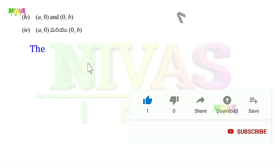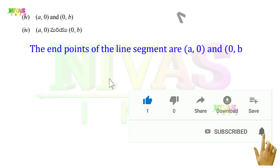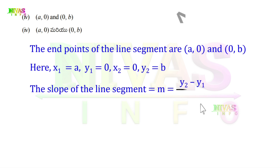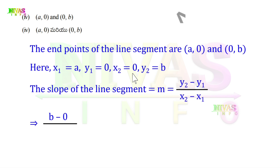Fourth one: endpoints are (a, 0) and (0, b). So x1 = a, y1 = 0, x2 = 0, y2 = b. Using the slope formula: M = (b - 0) / (0 - a) = b / (-a) = -b/a. So the slope is -b/a. This is the answer.